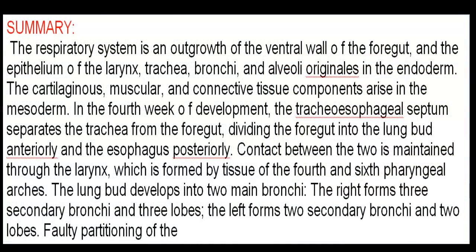Summary: the respiratory system is an outgrowth of the ventral wall of the foregut, and the epithelium of the larynx, trachea, bronchi, and alveoli originates in the endoderm. The cartilaginous, muscular, and connective tissue components arise in the mesoderm. In the 4th week of development, the tracheoesophageal septum separates the trachea from the foregut, dividing it into the lung bud anteriorly and the esophagus posteriorly. Contact between the two is maintained through the larynx, which is formed by tissue of the 4th and 6th pharyngeal arches. The lung bud develops into two main bronchi: the right forms three secondary bronchi and three lobes, the left forms two secondary bronchi and two lobes.